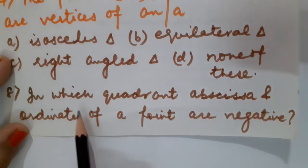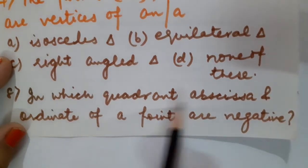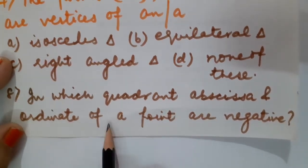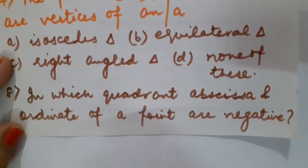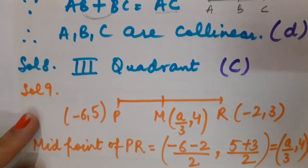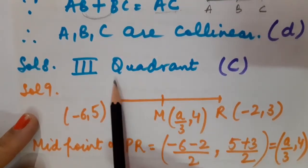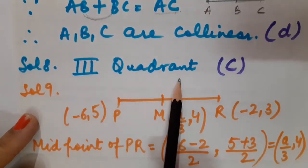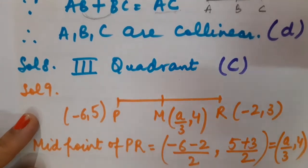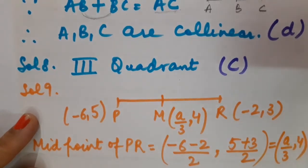Question 8: in which quadrant are both the abscissa and ordinate of a point negative? The answer is the third quadrant. In the third quadrant, both the x-coordinate and y-coordinate are negative. The right option is option number C.